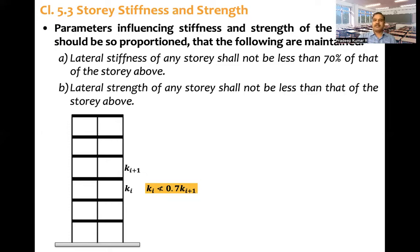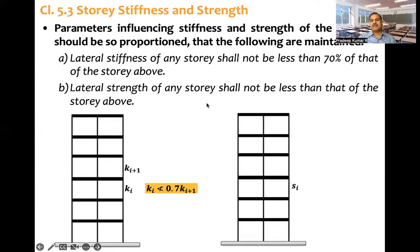Similarly, for strength: lateral strength of any story shall not be less than that of the story above. This is very important — the one who is supporting should not be weaker than the one getting support. For lateral load, the code says: compute the strength of the i-th floor and the (i+1)-th floor — the condition is that the strength of the i-th floor cannot be less than the strength of the (i+1)-th floor, that is, one floor above.